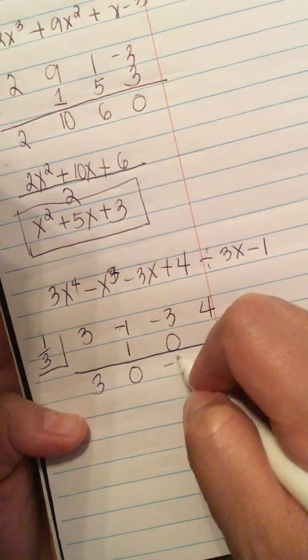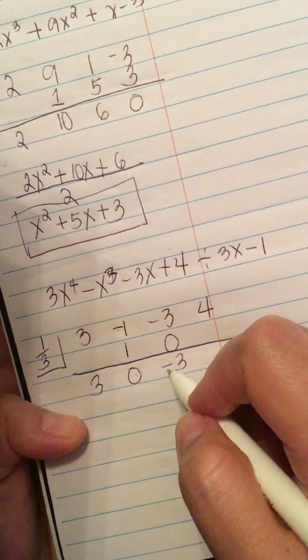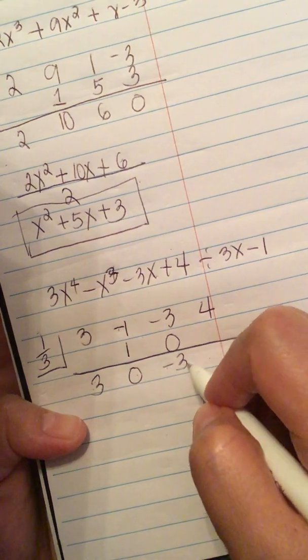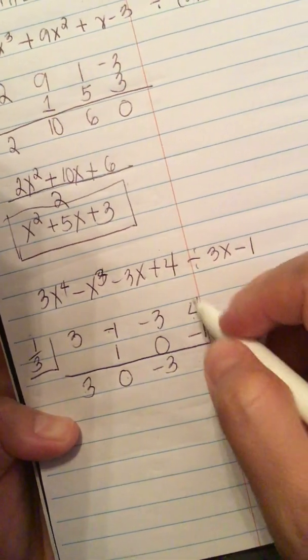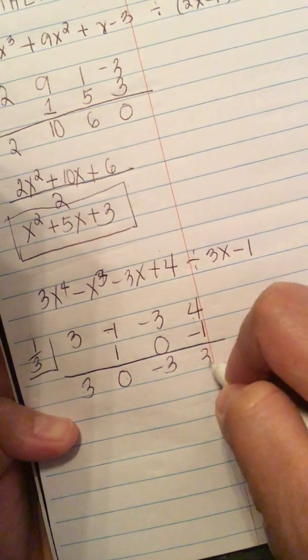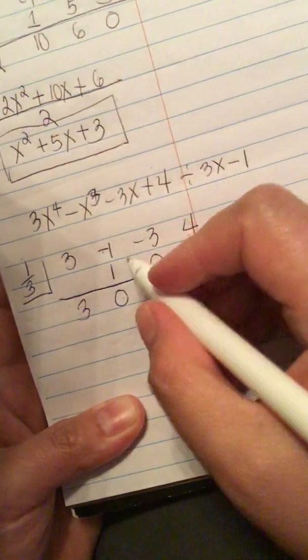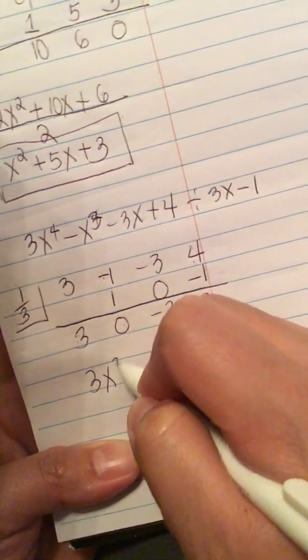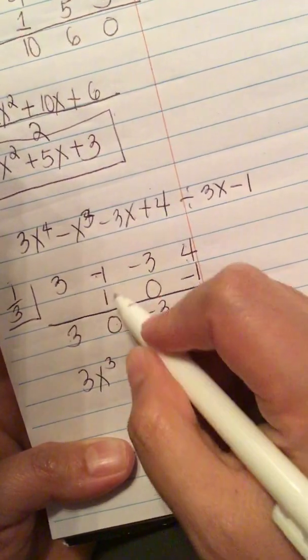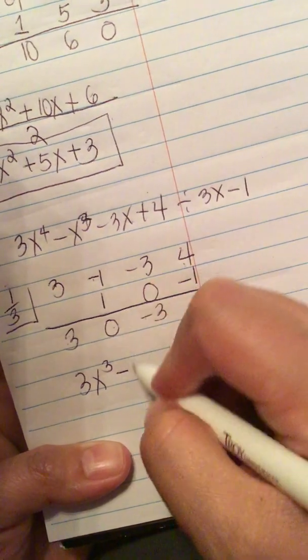Minus 3 plus 0 is minus 3. And then we have minus 3 times 1 third is a minus 1. And 4 minus 1 is 3.